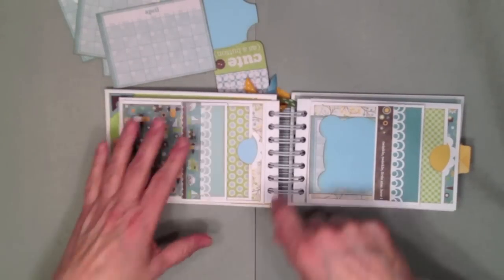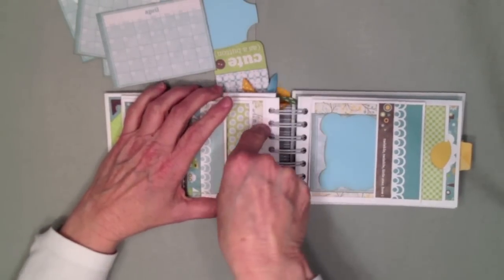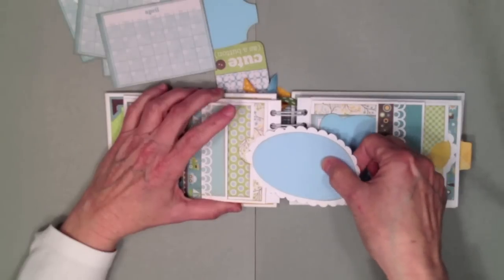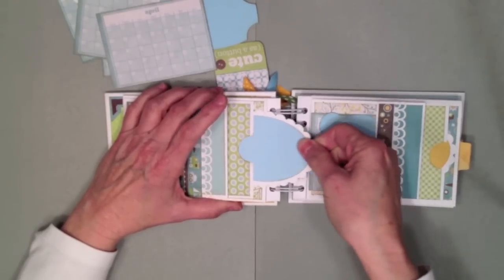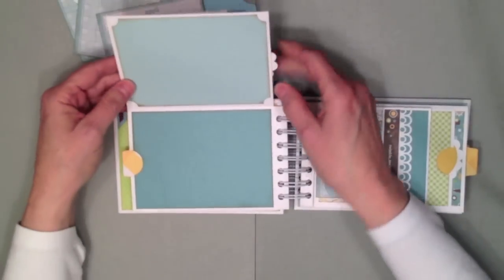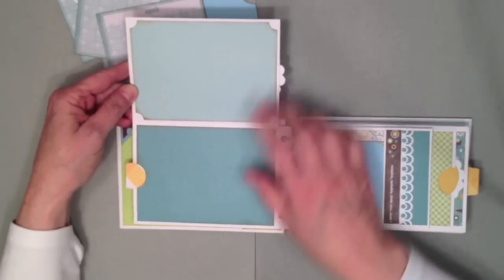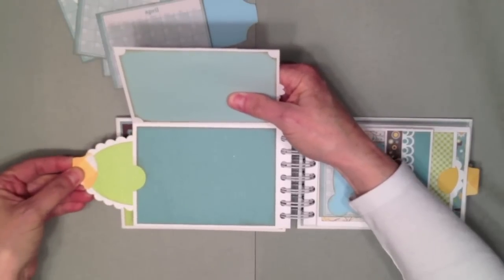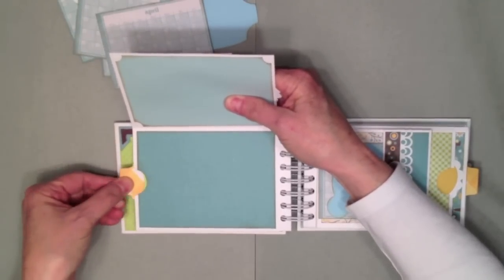There's a pocket here and you could put a picture here if you wanted or maybe some journaling. Again this flips out like this and you have a place for a photo and photo and your tag is in here. This flips up and you have a place for a photo here and a photo here and then you have a large tag back here as well.